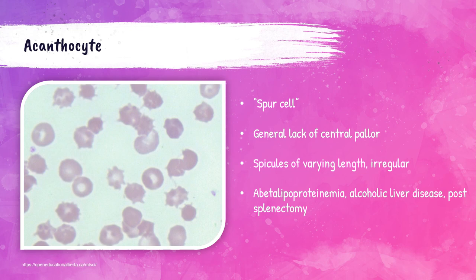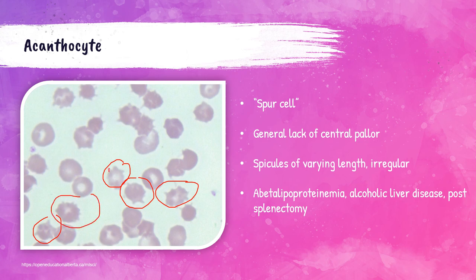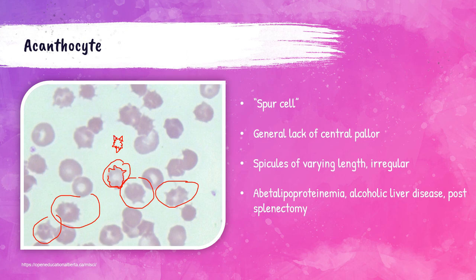As you can see, acanthocytes are very similar to echinocytes, but their projections are not as uniform — the spicules are sporadic with varying lengths and spaces between them, where an echinocyte would have spicules of the same length all the way around it.